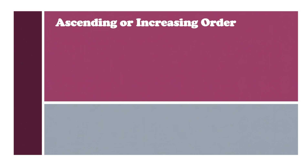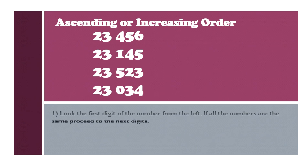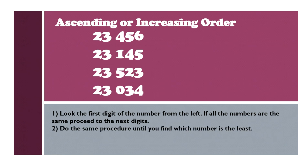How do we arrange numbers in ascending or increasing order? Let us try with these following numbers: 23,456, 23,125, 23,523, and 23,034. First, look at the first digit of the number from the left. If all the numbers are the same, proceed to the next digits. Second, do the same procedure until you find which number is the least. Then arrange the numbers from smallest to largest.